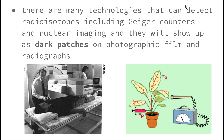There are many technologies that can detect radioisotopes, including Geiger counters — shown here on the right — which identify the different amounts of radiation being given off by the radioisotopes in different parts of the plant. Also nuclear imaging, shown in the picture on the left, where when the radioisotopes pass through the cardiovascular or circulatory system of animals, they show up as dark patches on photographic film and the radiographs produced by machinery such as X-rays and MRIs.